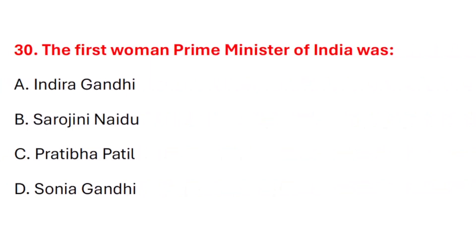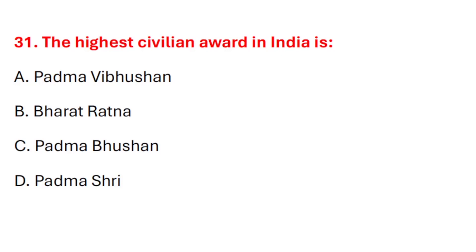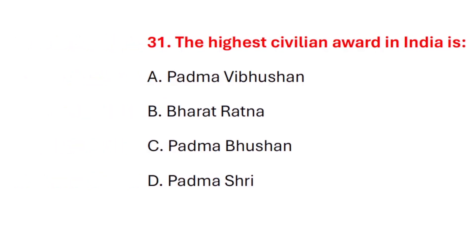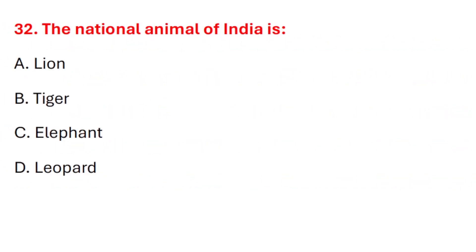Question 30. The first woman prime minister of India was? Correct answer is option A: Indira Gandhi. Question 31. The highest civilian award in India is? Correct answer is option B: Bharat Ratna. Question 32. The national animal of India is? Correct answer is option B: Tiger.